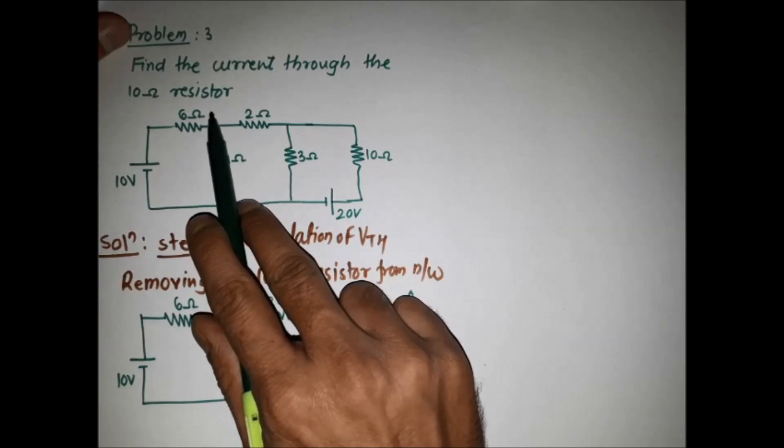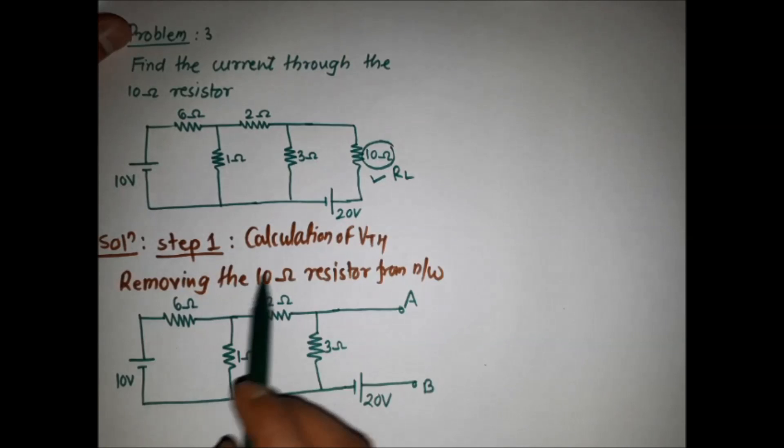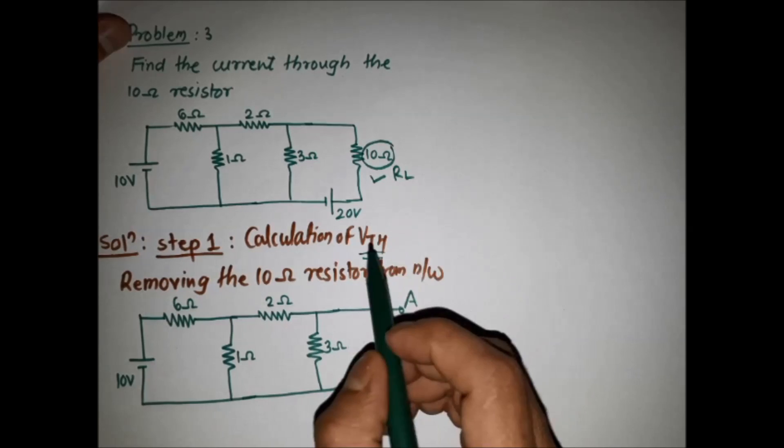The third problem, based on Thevenin's theorem, is to find the current through the 10 ohm resistor. We are considering this 10 ohm resistor as the load resistor. The first step is the calculation of VTH.